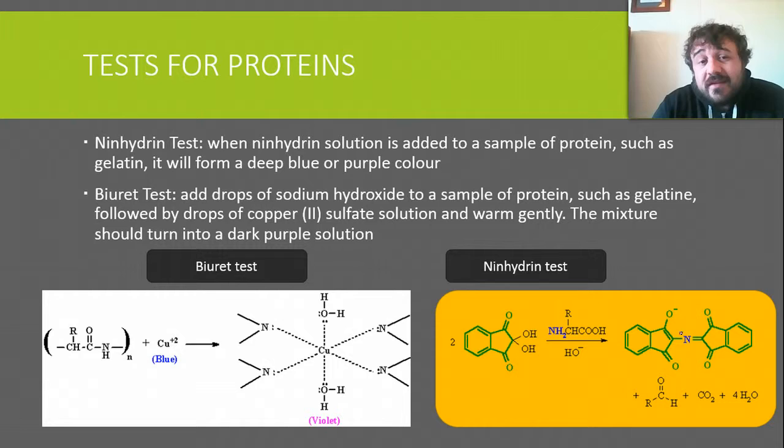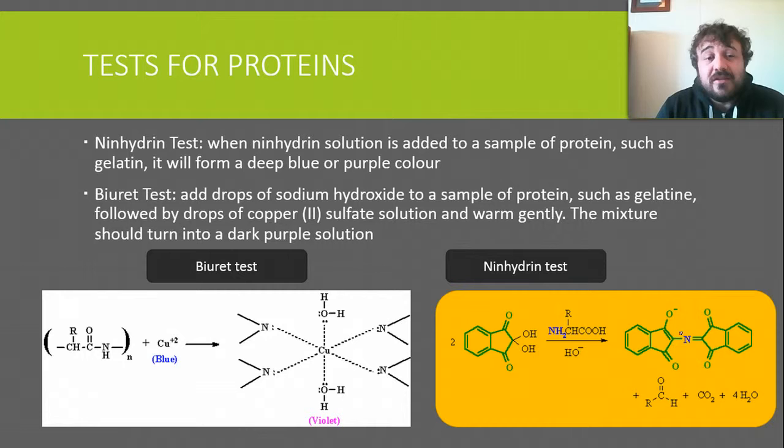You've also got the biuret test, which you'll have done before in junior school. You add sodium hydroxide, which straightens out and denatures the protein, then you add copper sulfate and warm it gently, and it goes from a light blue to a dark purple. A lot of protein tests tend to go dark purple.